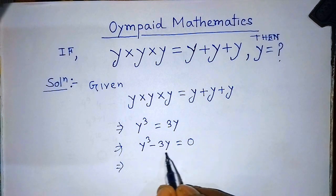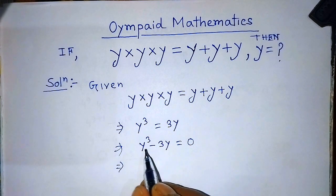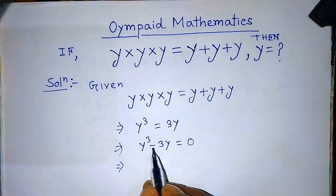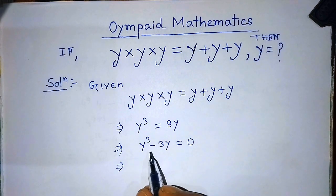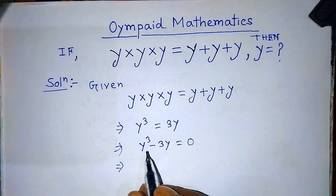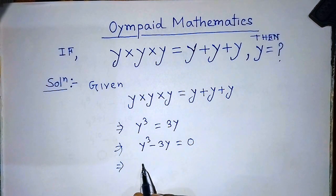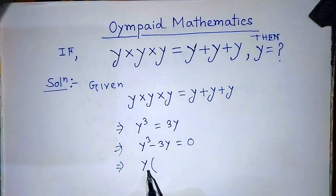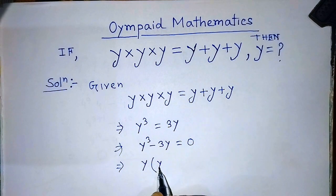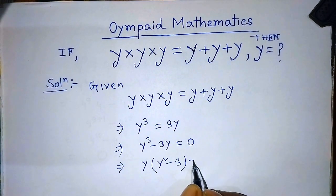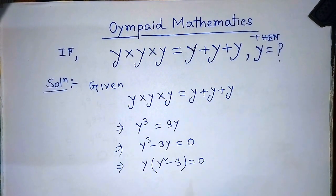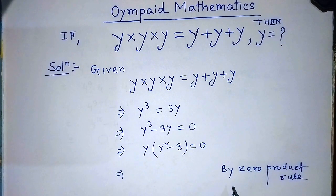On the left hand side of this equation, we have y to the power 3 minus 3 times y. In both terms, y is present, so we take common y from both terms. We can write y times y squared minus 3 is equal to 0.